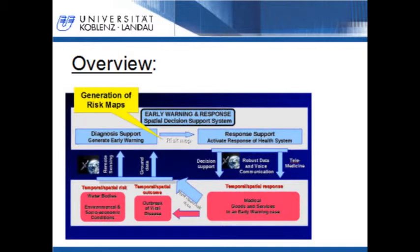Based on certain environmental parameters, risk maps for the outbreak and the progress of diseases can be generated. Dependent on these risk maps, a distribution of medical resources like medical devices or telemedicine can be determined and optimized in further steps. Within this research group, I am responsible for generating these risk maps.